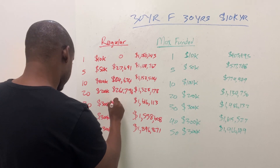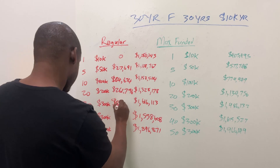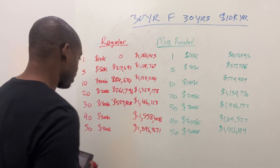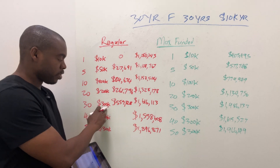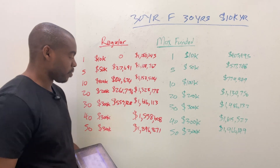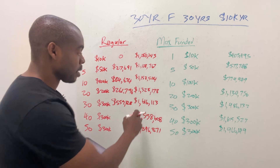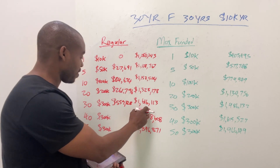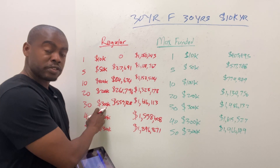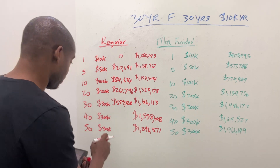Year 30, the policy's done funding. They've got $559,328 in cash value. You put in $300,000 over 30 years and you have $559,000 in cash value to use — not bad. And if you died, your beneficiary gets $1.6 million. You put in $300,000 and your beneficiary gets $1.6 million.